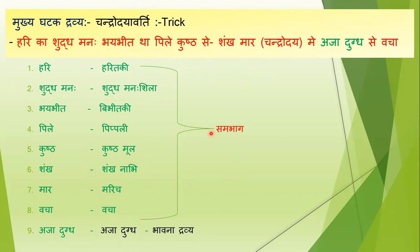Yeh jo upar ke sabhi eight ingredients hain, yeh aapko matra mein samabhaag lena hai, jisko aapko ajadubd se bhawna dheni hai. Bhawna ka arth hota hai ke koi bhi ek aisa liquid, jiske through aap jo main ingredients hain usko bhavit karte hain — means aapko woh liquid in contents ke andar daalna hota hai jab inका churn ban jata hai. To aapko isse tab tak mardhan karna hota hai, means tab tak aapko ise kharal mein chalana hota hai jab tak jo aap bhawna dravya daal rahe ho — for example, ajadubd — woh dry na ho jaye. Jab woh mardhan karte karte dry ho jata hai, to samjho usko ek bhawna mil gayi. Aise hi iski saath bhawna aapko dheni hoti hai.